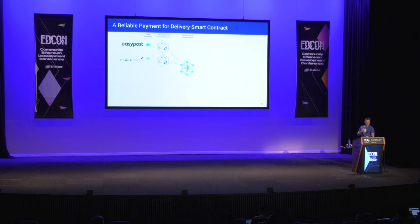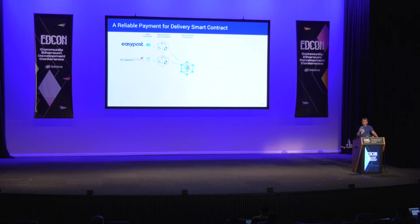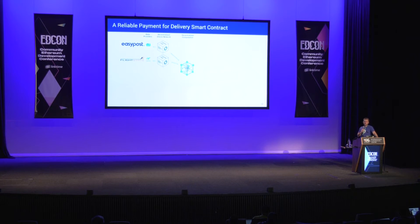A real-world example: a delivery-for-goods smart contract. Some of the oracles I've been talking about are actually live on our site at docs.chain.link. EasyPost is a carrier tracking API, so you can track where goods are being delivered.